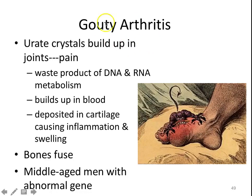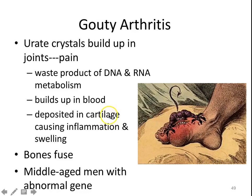There's another type called gouty arthritis, or gout. Crystals of urate build up in your joints. Urate is a waste product from DNA and RNA metabolism, and if you're unable to process that waste product properly, it builds up in the bloodstream and makes its way into cartilage — particularly where cartilage meets bone — and is deposited there. These crystals look like shards of glass, and if you have these sharp little crystals in a joint, they cause irritation, which leads to inflammation and swelling. Since bone only knows how to deal with inflammation by building more bone, basically bones start fusing.